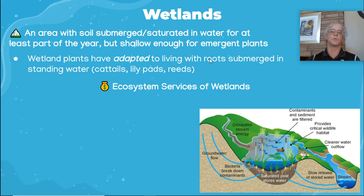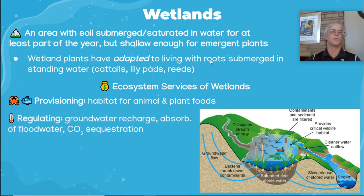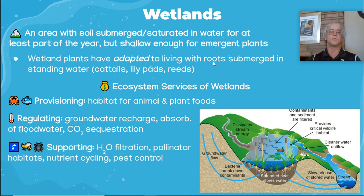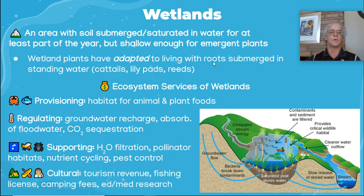Ecosystem services of wetlands include providing habitat for animals and plants, regulating groundwater recharge, increasing the amount of water going down so that we can drink it, absorption of flood water, and CO2 sequestration because of all the plant life. Supporting services include water filtration, pollinator habitats, nutrient cycling, and pest control. Cultural ecosystem services include tourism revenue, fishing licenses, camping fees, and educational and medical research.